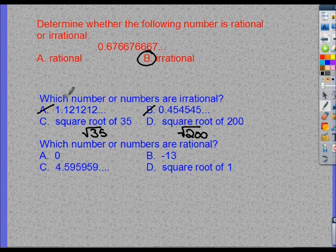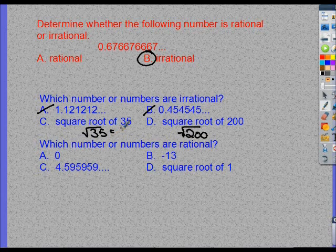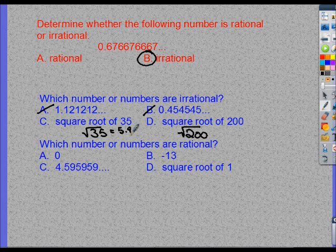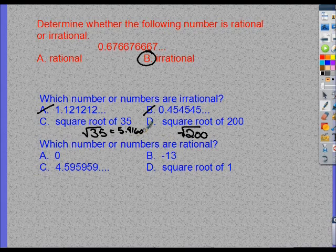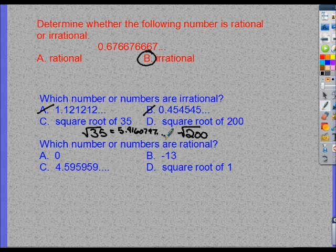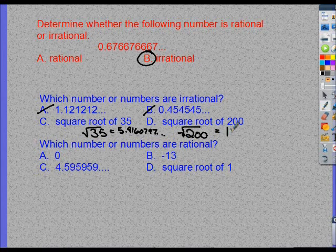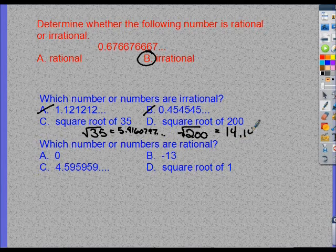we should know that the square root of 35 is equal to 5.9160797. So we're not sure if that one repeats. And we should know that the square root of 200 is 14.14213...